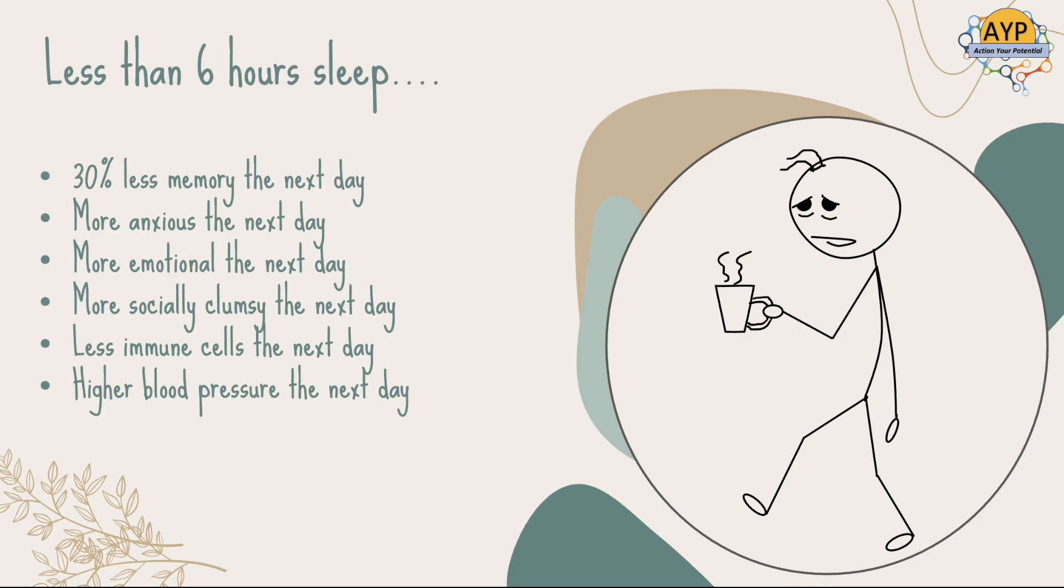70% of our immune cells are built at night. Our blood sugar and blood pressure are reset at night, so it's a whole body and brain experience. North of six hours, ideally seven or eight hours sleep every single night.